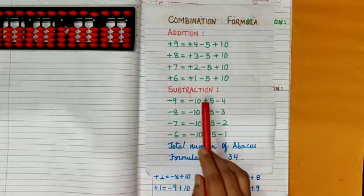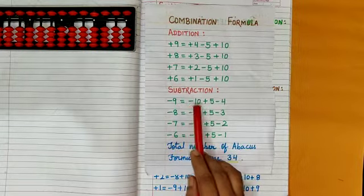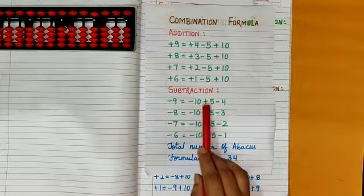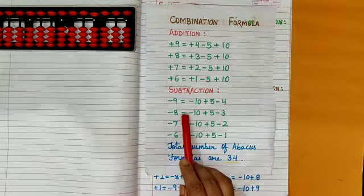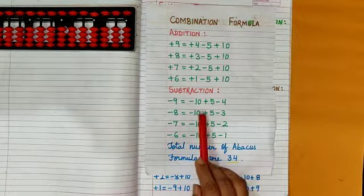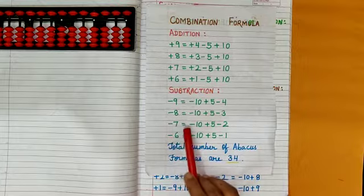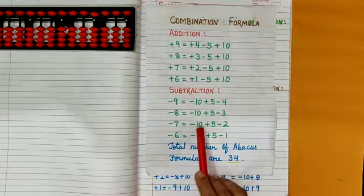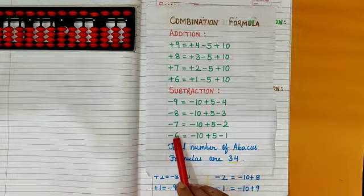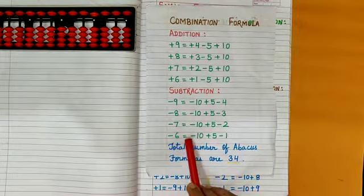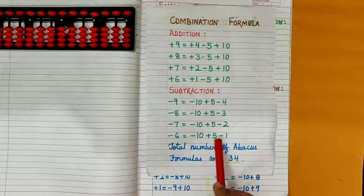Combination formula for subtraction: minus 9 is equal to minus 10 plus 5 minus 4, minus 8 is equal to minus 10 plus 5 minus 3, minus 7 is equal to minus 10 plus 5 minus 2, minus 6 is equal to minus 10 plus 5 minus 1.